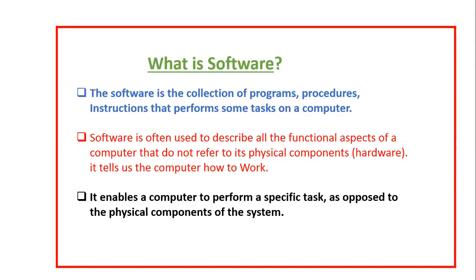By the second way you can define it like this: software is often used to describe all the functional aspects of a computer that do not refer to its physical components, and it tells the computer how to work. By the third way, it enables a computer to perform a specific task as opposed to the physical components of the system. So simply, the collection of programs is called software.